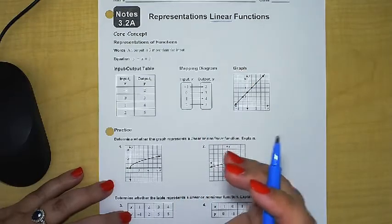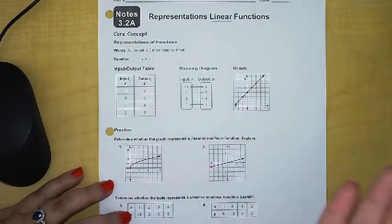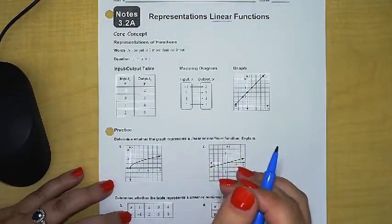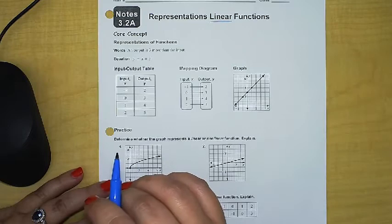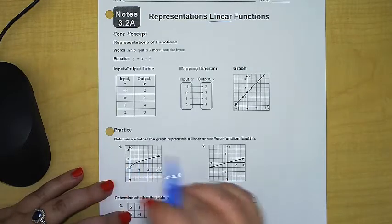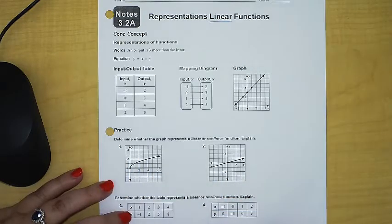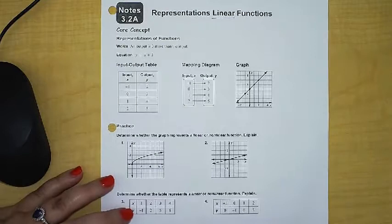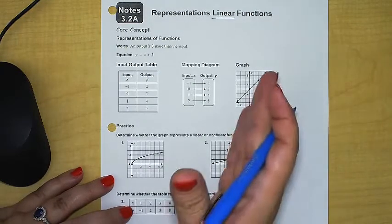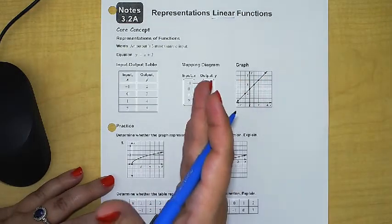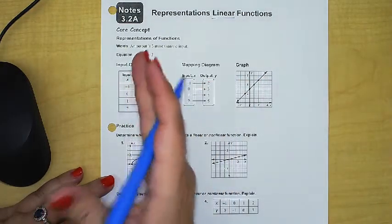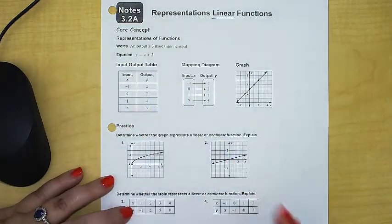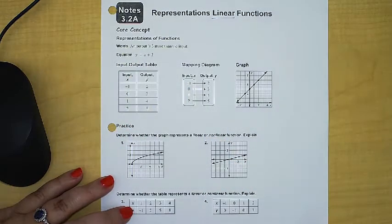First the linear one, which we're starting today, later the exponential functions, and in the spring we'll focus a lot on quadratic functions. So first today is all about identifying — being able to tell if something is or is not linear based on different forms or displays of data. Let's start with graphing.